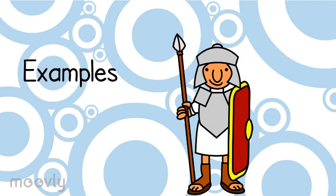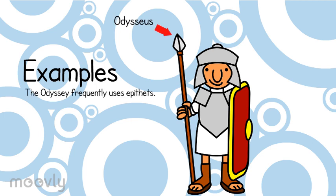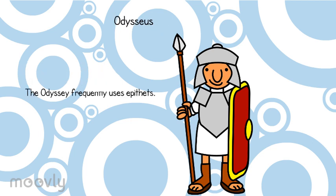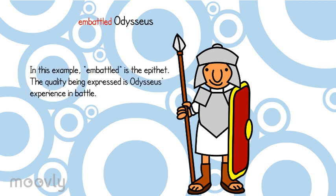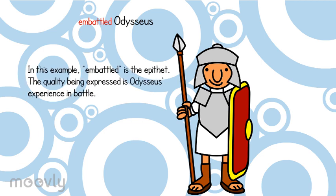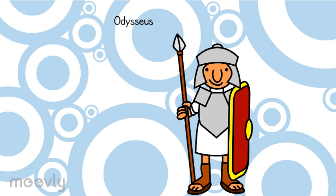For an example, let's use Odysseus. The Odyssey frequently uses epithets. Notice 'embattled Odysseus.' In this example, 'embattled' is the epithet. The quality being expressed is Odysseus' experience.